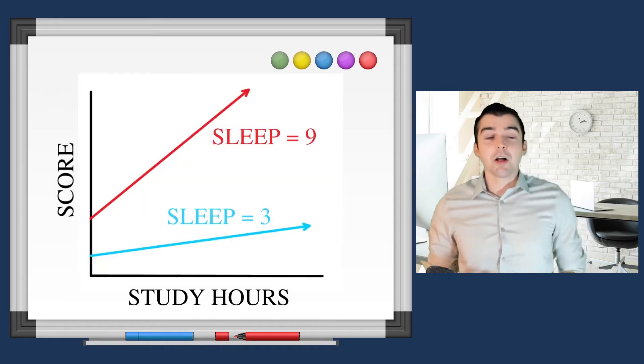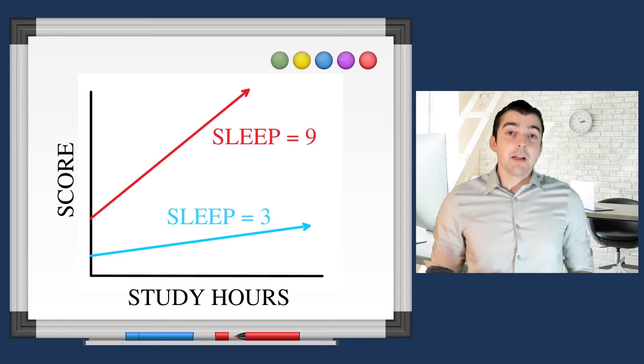That would be an example of two numeric variables interacting: the amount of time that you've spent studying and the amount of sleep from the exam.